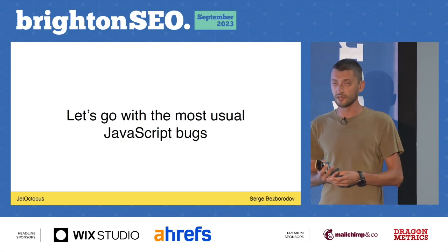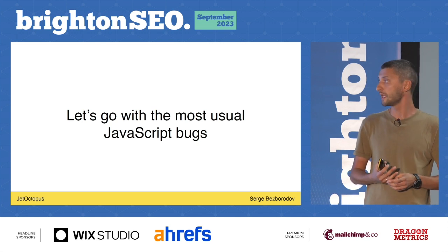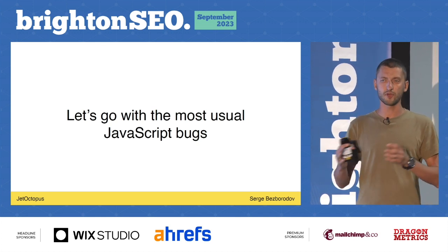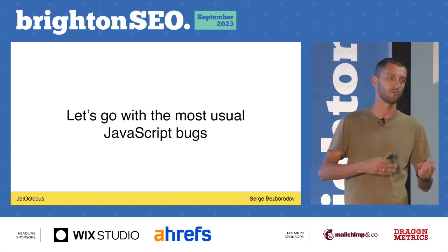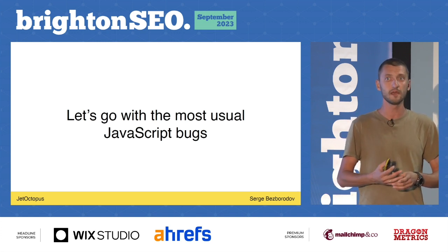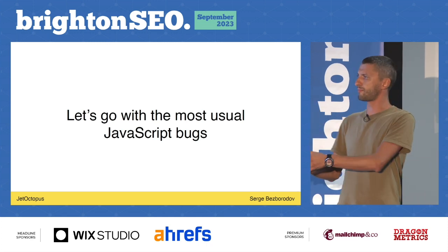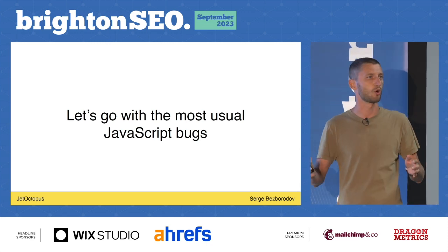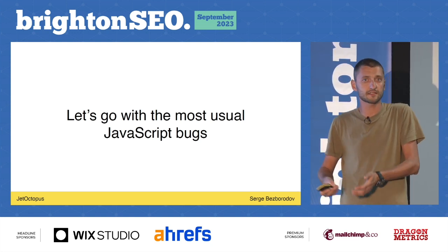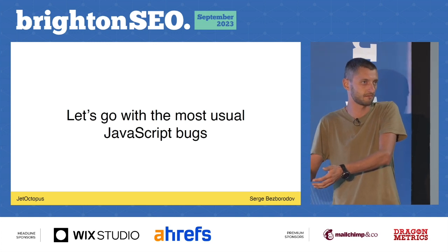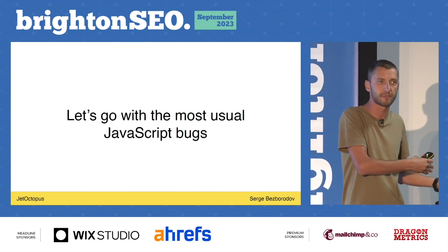In JetOctopus, we released JavaScript crawling probably exactly three years ago, in 2020. The first months, we had some issues — a client came to us and said we couldn't crawl their website properly. Now clients come and say we crawl the website wrong. And in the end, it's bugs on the website — that's why we can't find more pages, or we find unneeded pages.